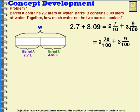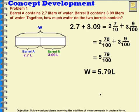When I do that, I can add the 2 and the 3 and get 5. I can add the 70 and the 9 and get 79. So 5 and 79 hundredths, written as a decimal, would be 5 and 79 hundredths liters. So how much water do the 2 barrels contain? 5 and 79 hundredths liters.